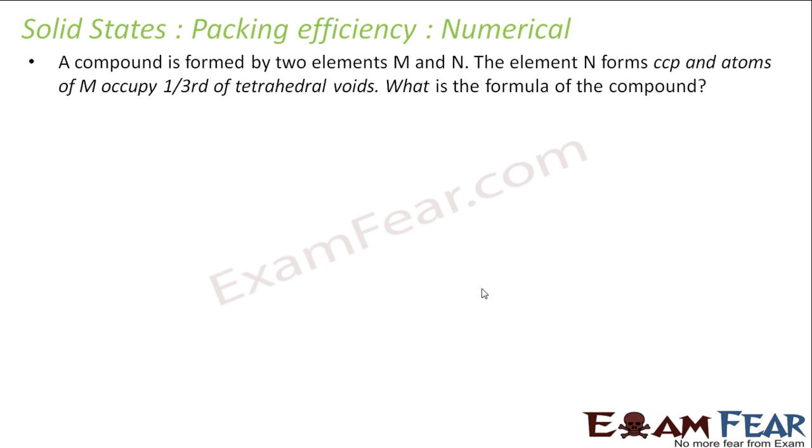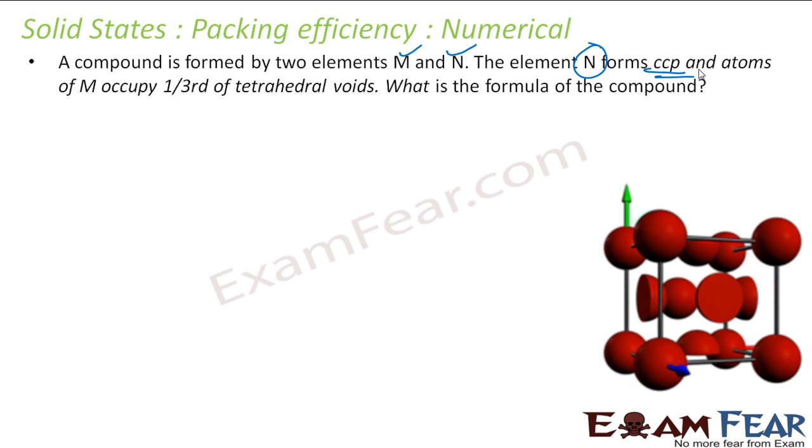The question says a compound is formed by two elements M and N. N forms CCP. So let's form CCP. N forms the CCP, and atoms of M occupy one-third of tetrahedral voids. What is the formula of the compound?